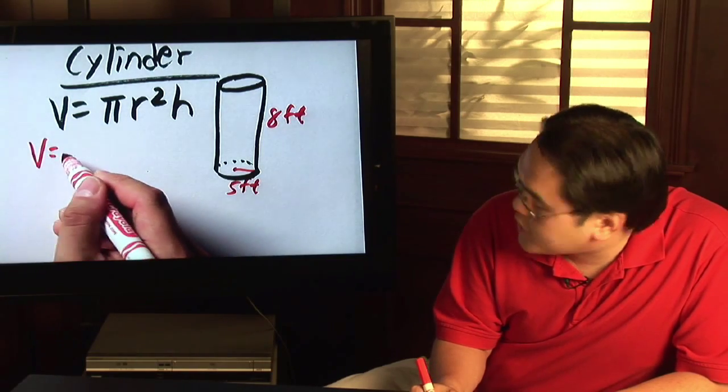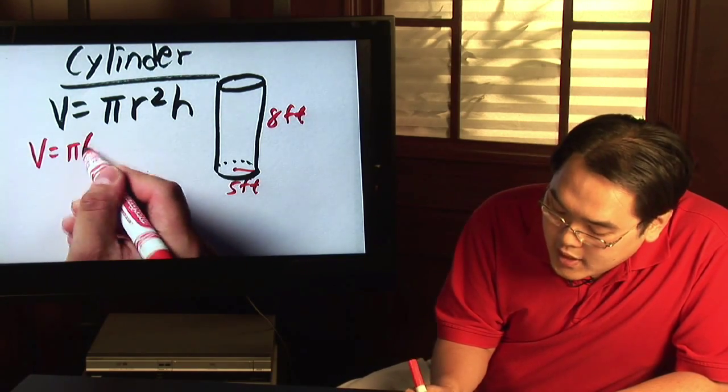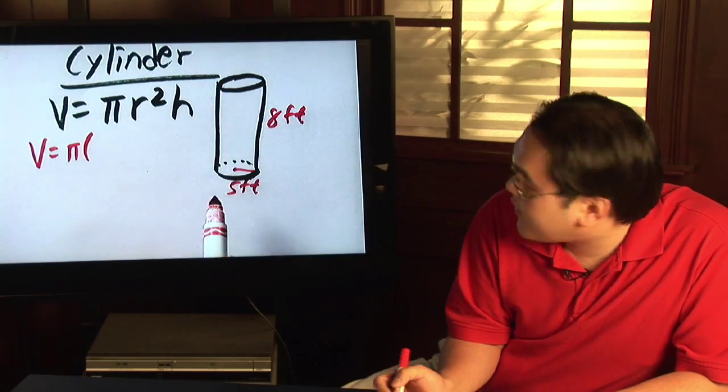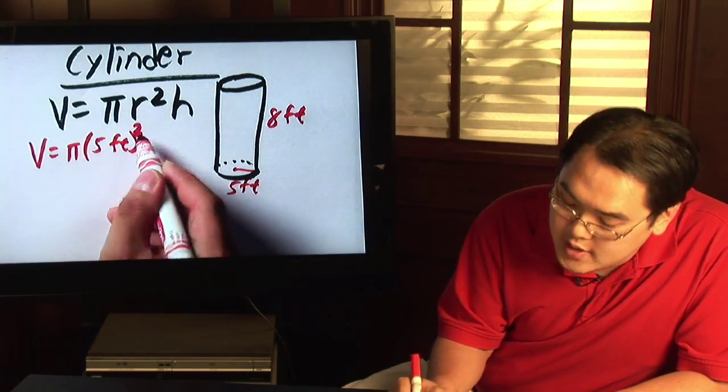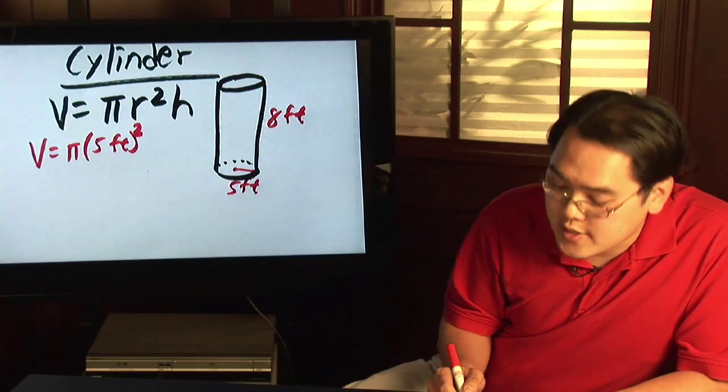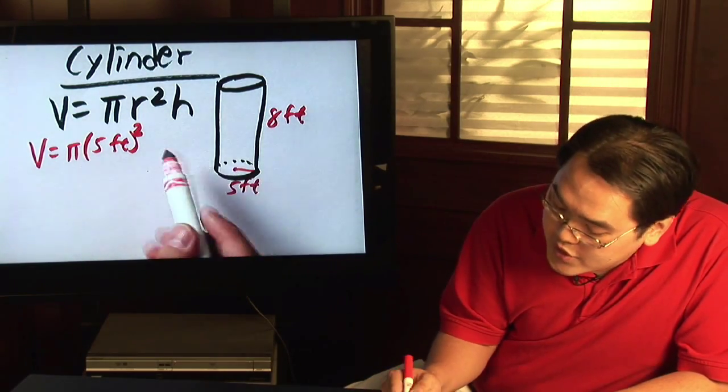You have V equals pi times your r. Your radius is five feet, so you have five feet. Always include the units so you have the correct cubic units at the end. Times the height, which is eight feet.